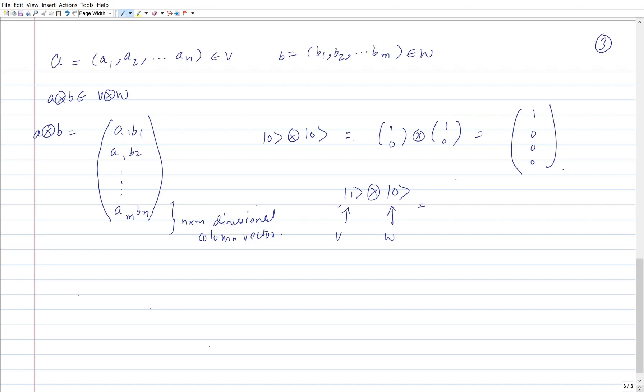One can also define an inner product on the tensor product vector space and that's rather easy. I have an inner product of two vectors belonging to V tensor W vector space.